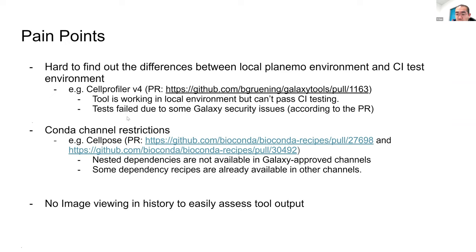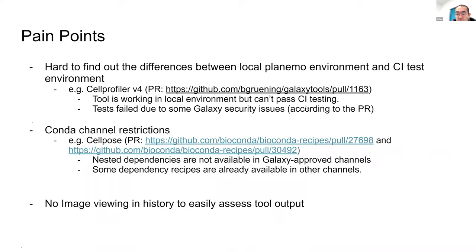CellProfiler itself has about more than 90 modules. For version 3 we made about 90 modules available in Galaxy, but some workflows may not be compatible between versions 3 and 4. For CellProfiler version 4 tools, based on feedback from the PR, there are some Galaxy security issues which prevent us from creating the tool. We tested everything locally and got green lights for everything, but when trying to deploy it we actually got some errors from the CI testing. Currently we're not sure how to resolve it.